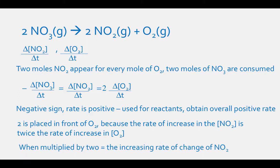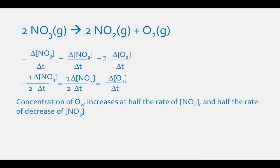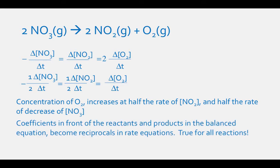When these values are multiplied by 2, they equal the increasing rate of change of NO2. Now let's rearrange this equation by dividing all the values by 2. We end up with negative one-half the change in concentration of NO3 per delta time equals one-half the change in concentration of NO2 per delta time equals the change in concentration of O2 per delta t. This means that the concentration of O2 increases at half the rate of increase in the concentration of NO2 and half the rate of decrease in the concentration of NO3. The coefficients in the balanced equation become the reciprocal in the equation expressing the relative rates of change.